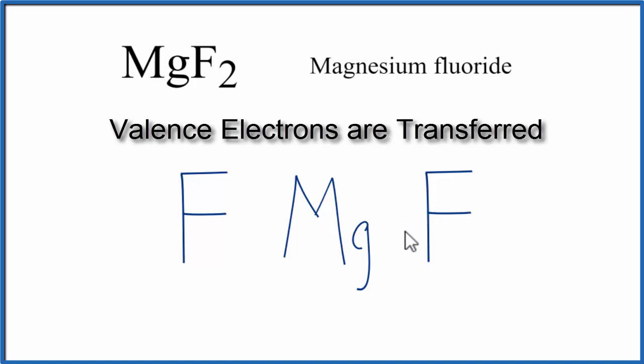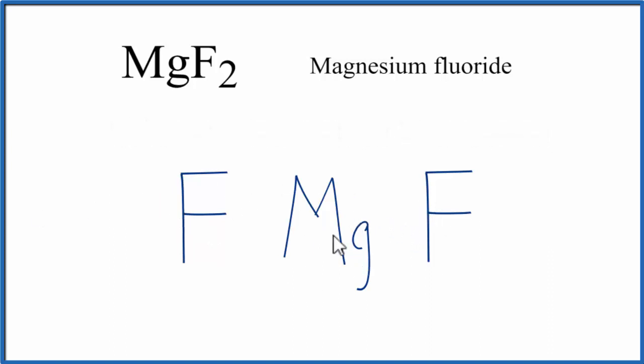And in an ionic compound, valence electrons are transferred from the metal to the non-metals. So we have magnesium in group 2 on the periodic table, that means it has 2 valence electrons.